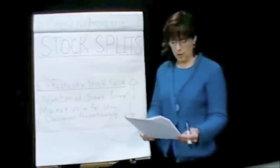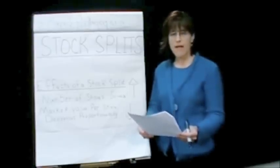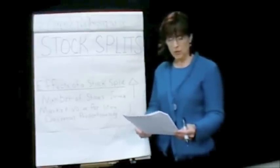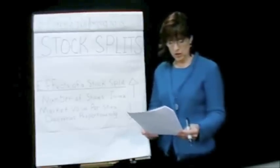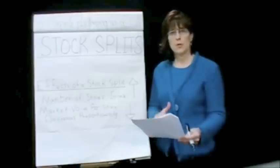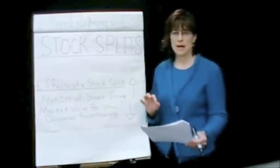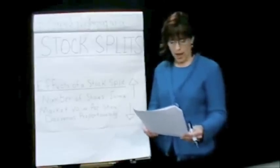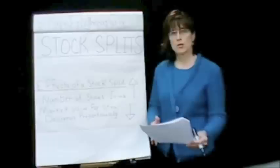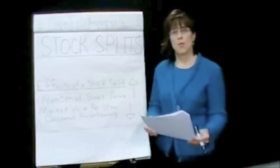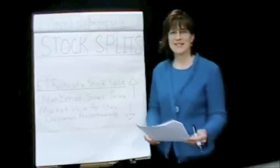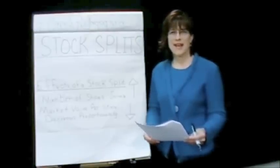Let's look at the last problem: the ABC company had 90,000 shares of common stock outstanding and declared a 2-for-1 stock split — one additional share for each share issued. The market price before the split was $200. First question: what will be the number of shares outstanding after the split? We had 90,000 shares and a 2-for-1, so we multiply: 90,000 times 2 gives us 180,000 shares. What would be the approximate market price after the split? We take $200 and divide by 2, which gives us $100 per share. And I hope that helps you on these topics of stock transactions, cash dividends, and stock splits.